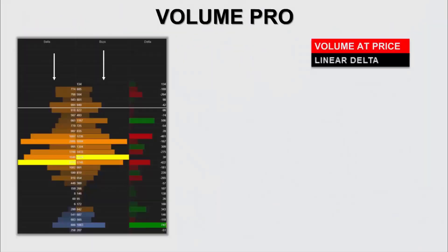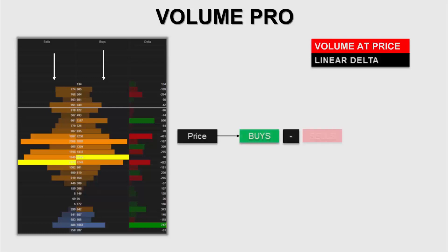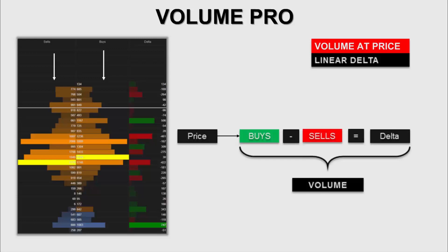In volume at price, we have the volume delta that lets us compare the buys and sells at each price. We'll be looking at linear delta and diagonal delta. Linear delta places weight in the price level — the buyer's volume is compared to the seller's volume at the same price. We subtract the seller's volume from the buyer's volume for each price, providing an indication of order flow at that particular price.